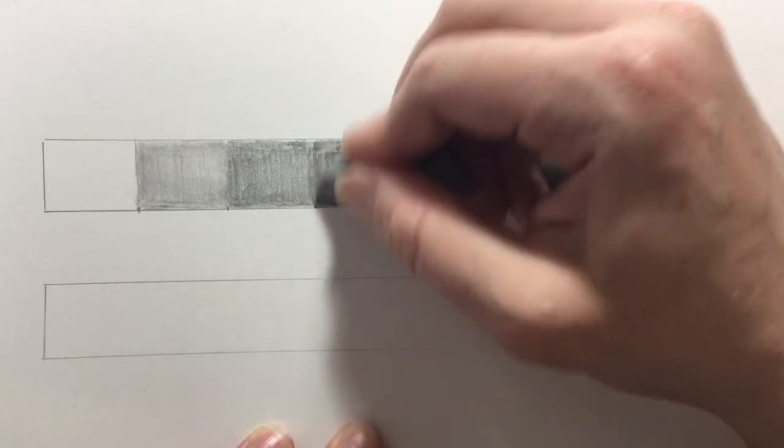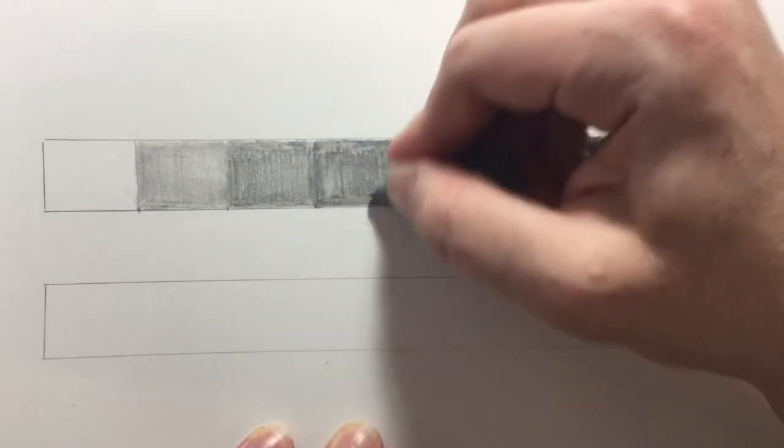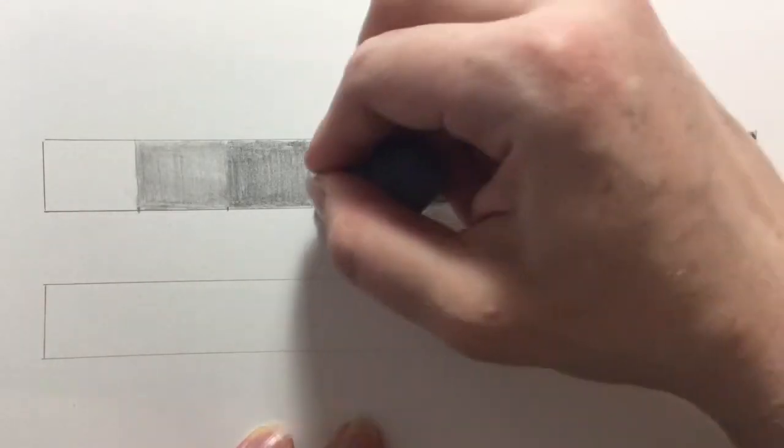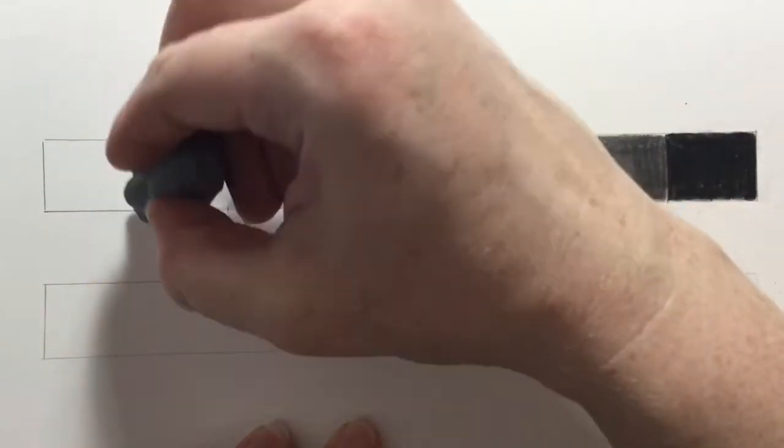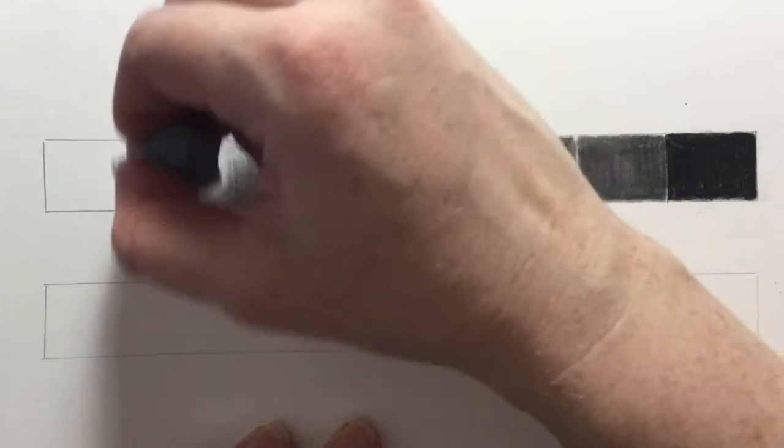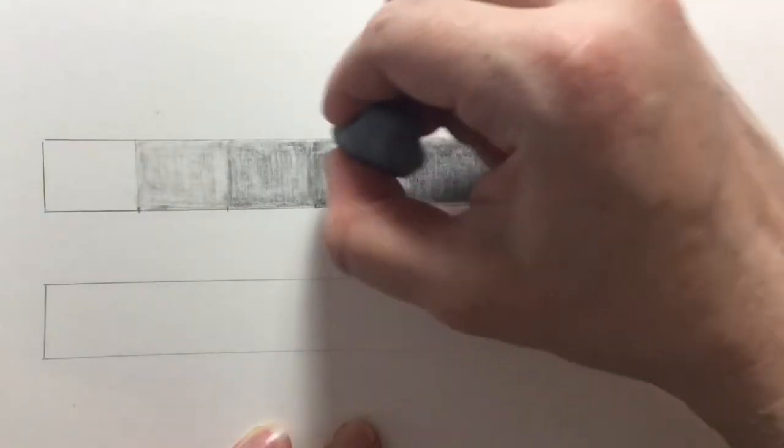I like to use a kneaded eraser to lift out some of the value where it got a little bit too dark and lighten up my value boxes on the left. But you can do this with any eraser. It doesn't have to be a kneaded eraser. It can just be a pink eraser like you might have at home.